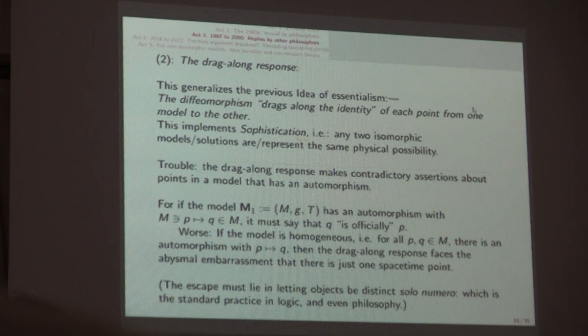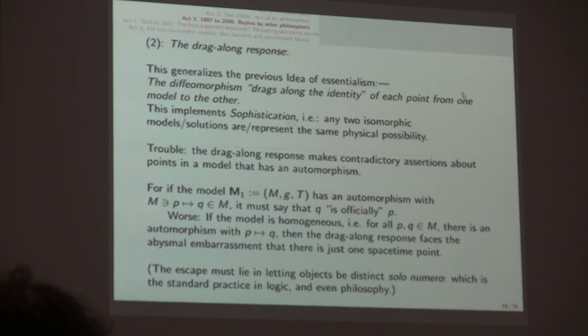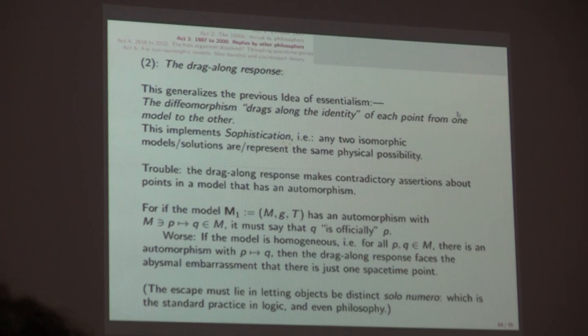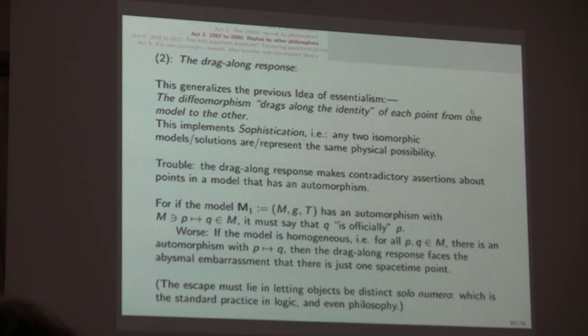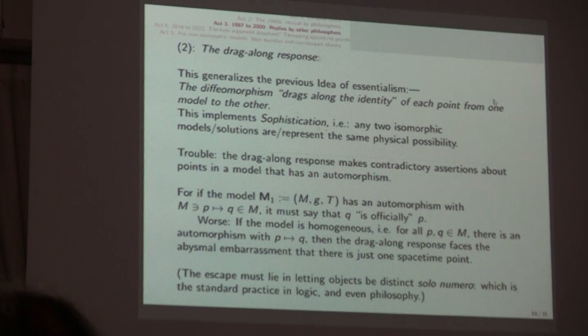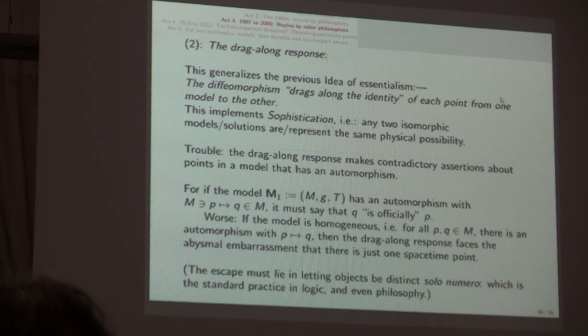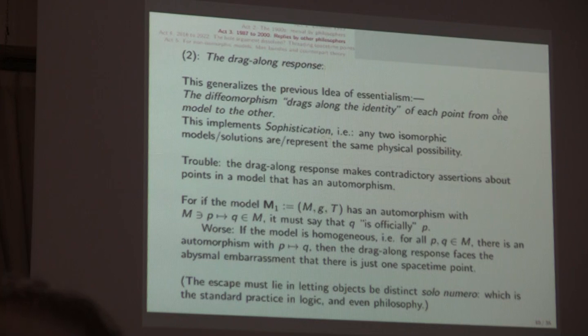It's going to generalize the previous idea of essentialism. It says the diffeomorphism drags along the identity of each point from one model to another. So the idea is if the diffeomorphism little d sends a point little p to little q in the bold M sub 2 the dragged-along model, you must say little q really is p because actually I've dragged along all the geometric and material properties and relations. That's the spirit of the drag-along response and it certainly does implement sophistication.